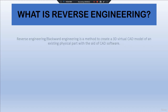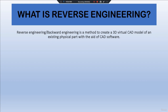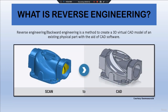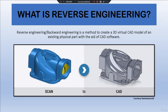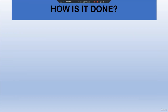Reverse engineering, also known as backward engineering, is a method to create a 3D virtual CAD model of an existing physical part with the aid of CAD software. Here we have scan data received in .stl format, and here we have our CAD data — computer-aided design data — obtained from this scanning using CAD tools. The CAD file obtained is a replica of the scanned data.